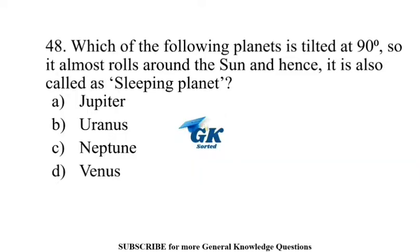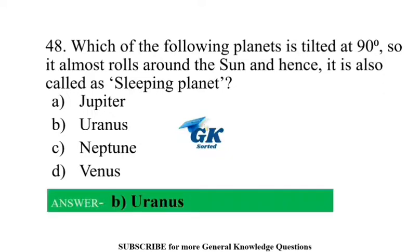Which of the following planets is tilted at 90 degrees so it almost rolls around the sun, and hence it is also called the sleeping planet? Uranus.